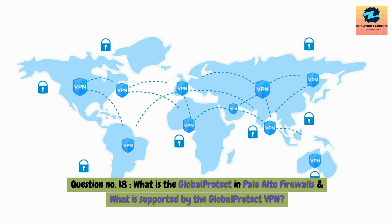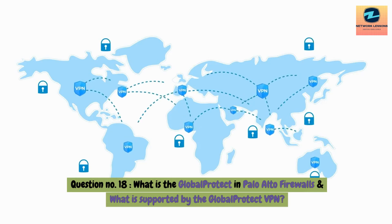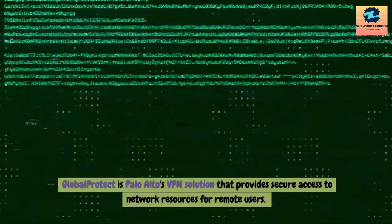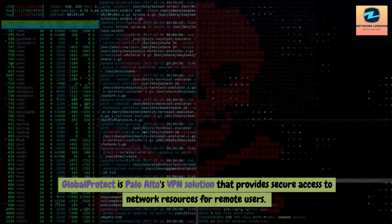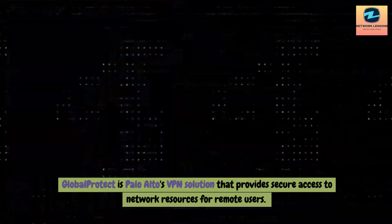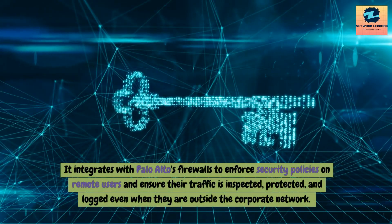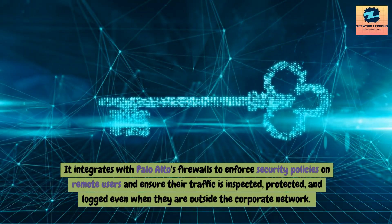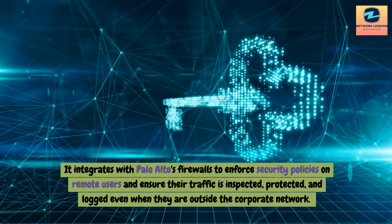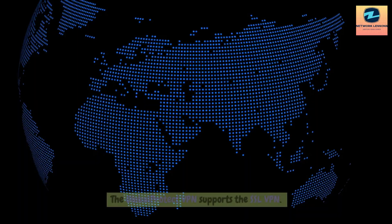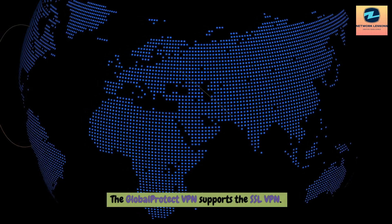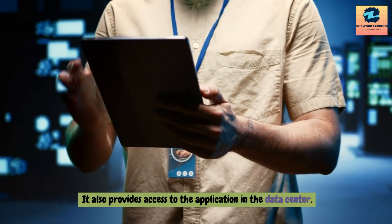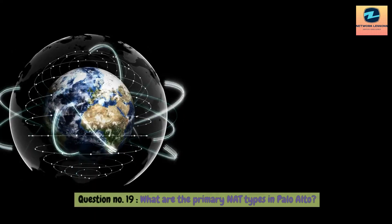Question 19: What is GlobalProtect in Palo Alto firewalls and what is supported by the GlobalProtect VPN? Answer: GlobalProtect is Palo Alto's VPN solution that provides secure access to network resources for remote users. It integrates with Palo Alto firewalls to enforce security policies on remote users, ensuring their traffic is inspected, protected, and logged even outside the corporate network. GlobalProtect VPN supports SSL VPN and also provides access to applications in the data center.